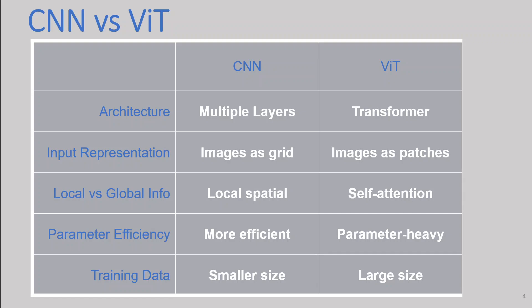Then we have parameter efficiency. CNNs are known for their parameter efficiency due to weight sharing and local receptive fields. They can learn hierarchical features with fewer parameters, making them more suitable for smaller datasets. ViTs typically require a large number of parameters to capture global information effectively, making them more parameter-heavy compared to CNNs and potentially requiring larger datasets for training.